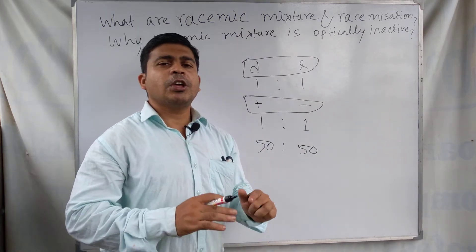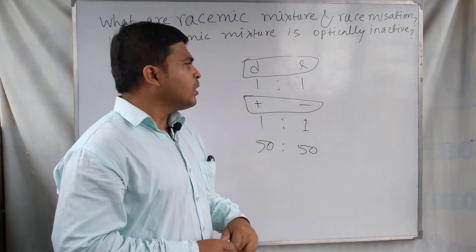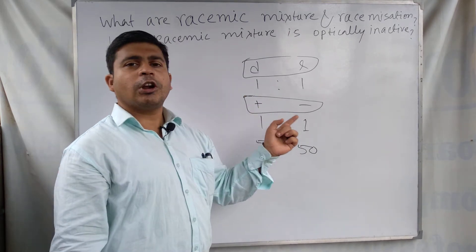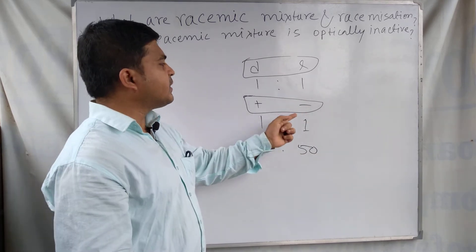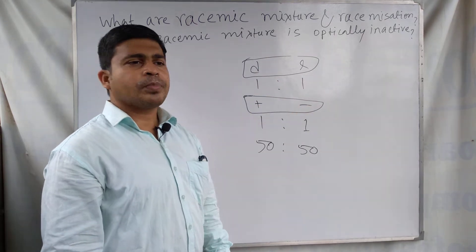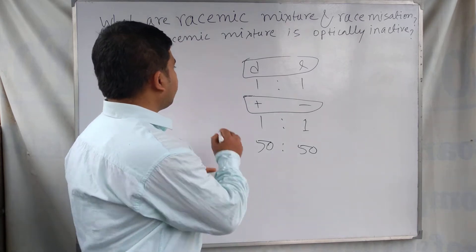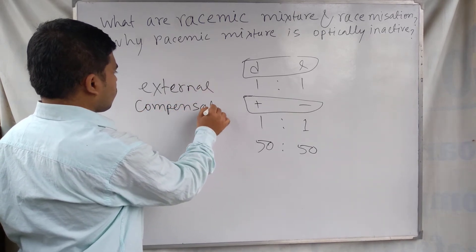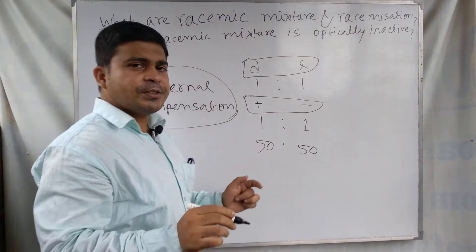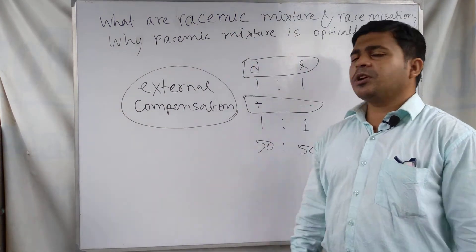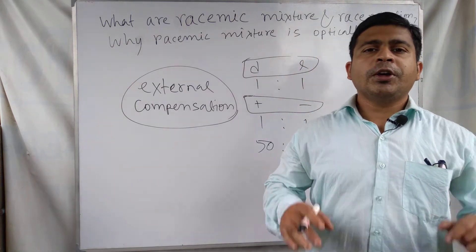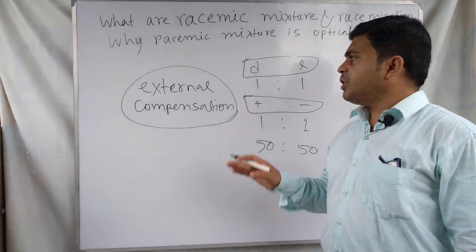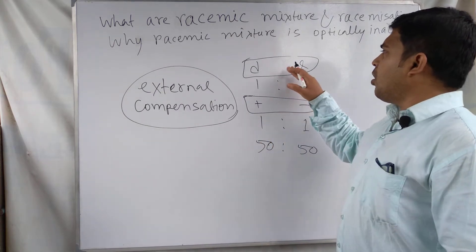Why is the racemic mixture optically inactive in nature? In the case of a racemic mixture, the plus enantiomer turns the plane of polarized light in the same magnitude but in the opposite direction to that turned by the minus enantiomer. The reason is external compensation: the rotation made by the D enantiomer is cancelled by an equal and opposite rotation by the L enantiomer.